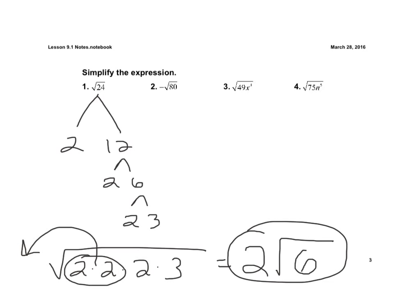Number 2 is a very similar type of problem — we just leave the negative out in front with the answer. Now we're going to look at number 4, which involves variables.